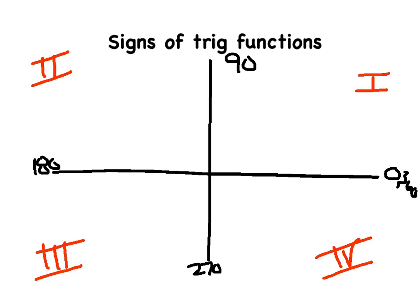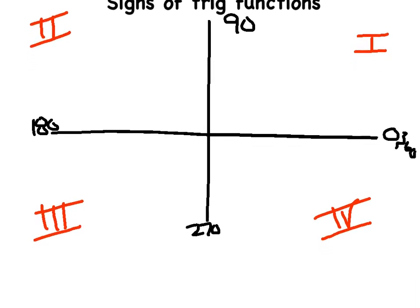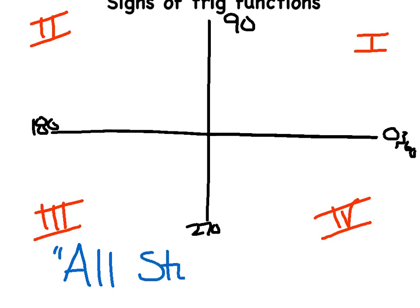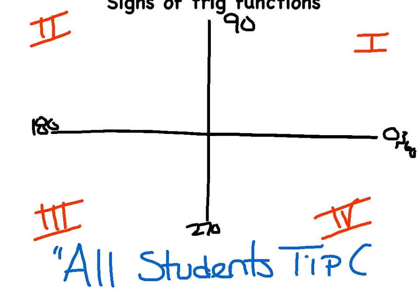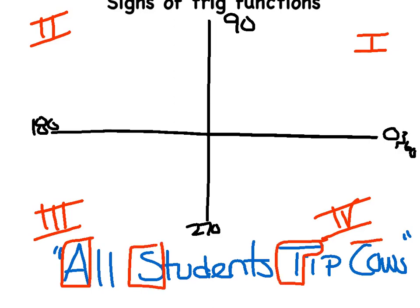All these trig values have signs, whether they're positive or negative, and it changes in every quadrant that you enter. We have a little saying we want you to use, or you can make up your own. I'm going to write it at the bottom: 'All students tip cows.' Take your pen and box in A for all, S for student, T for tip, and C for cosine.